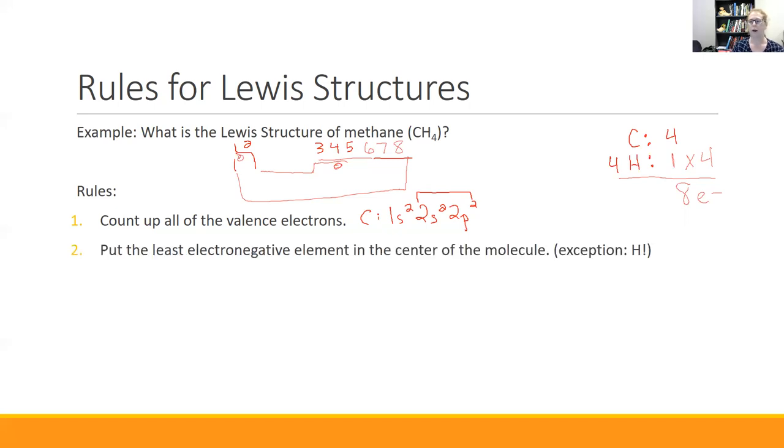Going on, what I want to do is I want to put the least electronegative element in the middle of my molecule. And there is an exception to that, and that's hydrogen. Hydrogen will never, ever, ever, ever go on the inside of a molecule. Hydrogen is always on the outside. Another rule of thumb that works, I'd say 95% of the time, is that if you can make the structure symmetrical, you should do it. And so all of those things together, the fact that hydrogens never go on the outside, carbon's not super electronegative, and I should look for symmetry. It says I'm going to put the carbon in the middle, and I'm going to line up four hydrogens around it.